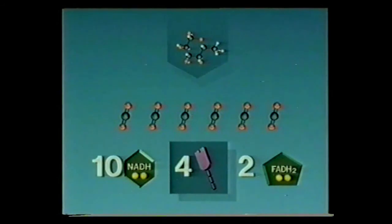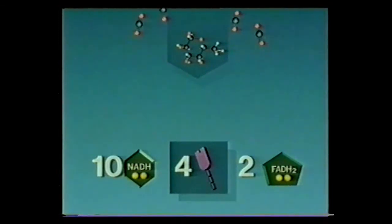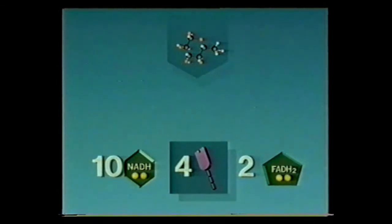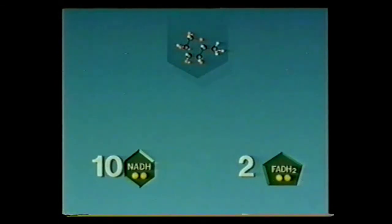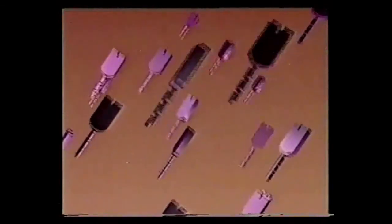Now let's do what we usually do with waste: get rid of the carbon dioxide. So up to this stage in cellular respiration, glucose has produced four power-packed ATPs and twelve intermediate energy carriers. In the next program, we'll watch these intermediate energy carriers deliver the payload of ATP.